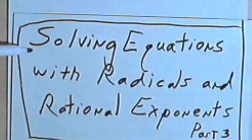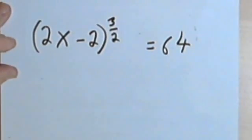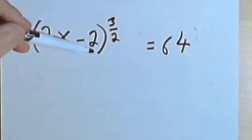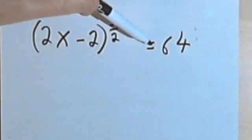This is going to be the third video about solving equations with radicals and rational exponents. So let's take a look at this problem. Here I've got 2x minus 2, and that expression is being raised to the 3 halves power, and it equals 64.